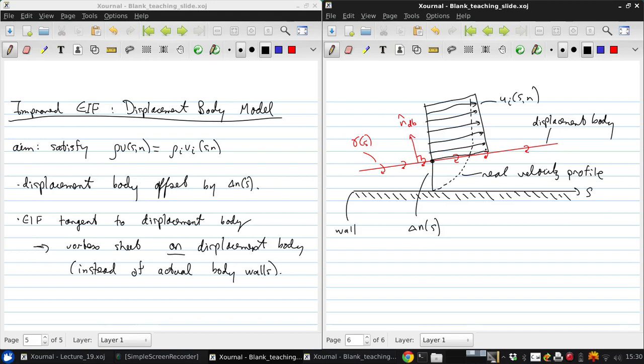So this is an easy idea to understand. The effect of the reduced mass flux in the boundary layer creates a displacement body which pushes away the effective wall, and the equivalent inviscid flow is then tangent to that new effective wall. But what must be determined is what value of δ_N of s will give the right vertical mass flux.